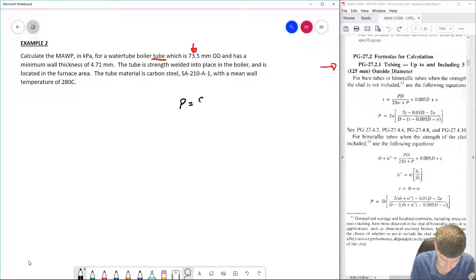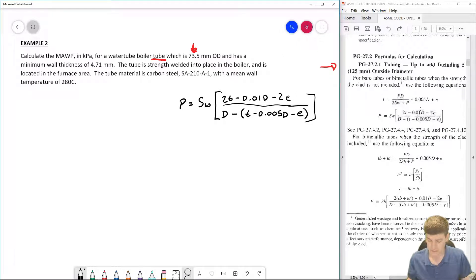So P equals SW times, in large brackets, 2T minus 0.01D minus 2E, all of that divided by D minus T minus 0.005D minus E. Double check my equation again. Just be careful that you don't have mistakes with the decimal places - that's pretty common - as well as the negative signs. We have a whole bunch of negatives on the bottom. Just be careful with that.